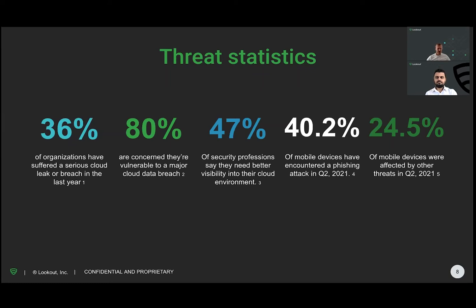We also have two more numbers: 24.5% of mobile devices are affected by threats in general, but 40.2% have encountered a phishing attack. Living in Germany, I've received many phishing attempts through SMS — always related to parcels I should receive, with tracking links using services like DHL to drive attention. Phishing is the easiest way to attack someone, and 40% proves just how prevalent it is.